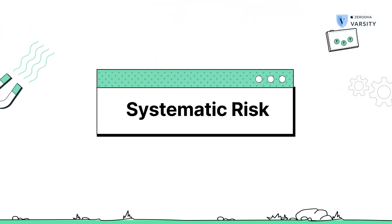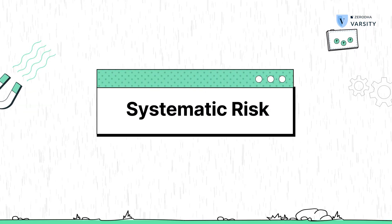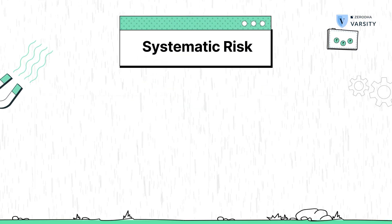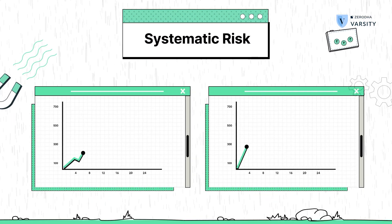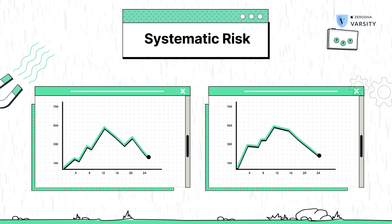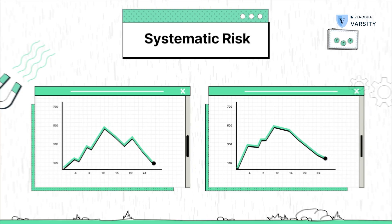Risk, as you know, is of two types: systematic and unsystematic risk. Systematic risk is the risk that is prevalent in the market as a whole. An example of systematic risk can be bad monsoons — a bad monsoon will impact your portfolio negatively as much as it would impact mine.